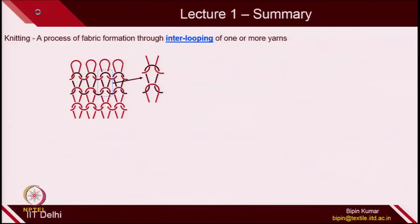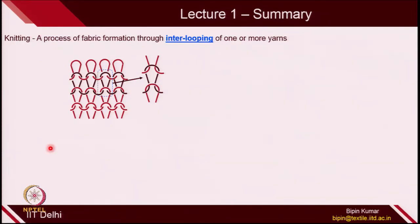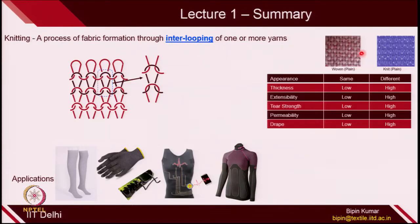In the previous lecture, you might have understood the basic definitions of knitting. We talked about the knitting process, which is just the inter-looping of one or more yarns. You can see these loops which are interconnected with the top loop and bottom loop. We also talked about the application potential of knitting fabrics — hosiery, gloves, undergarments, smart textiles, sports, shoes, and many other technical applications.